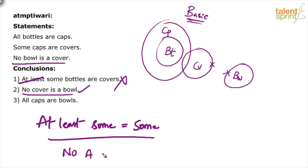No A is B—what's the definite conclusion? No B is A. So if he says no bowl is a cover, definitely no cover is a bowl without even worrying about the diagram. Conclusion two definitely follows.